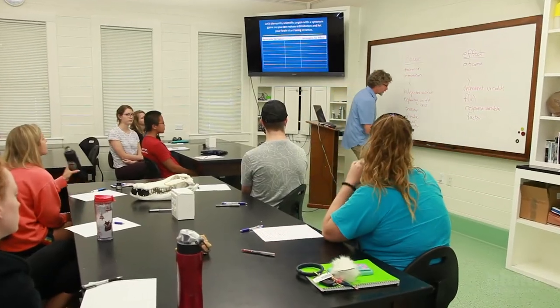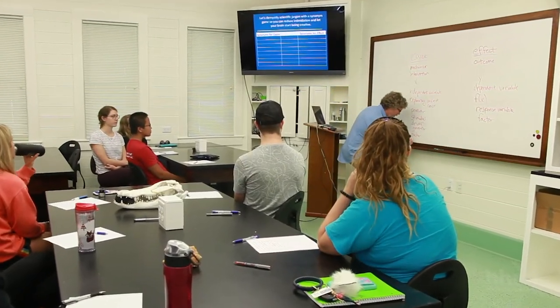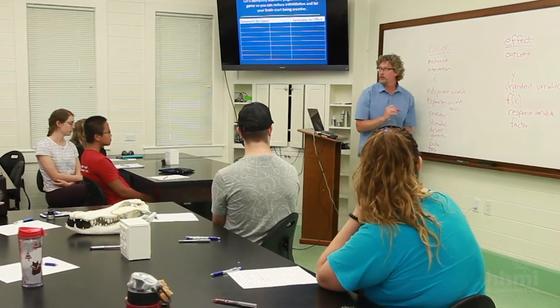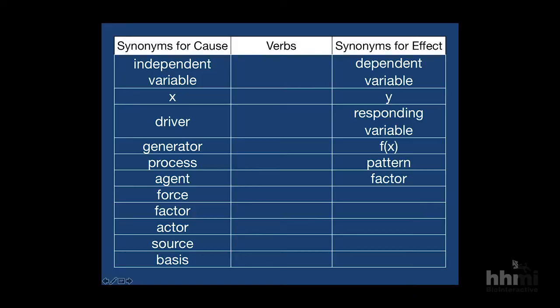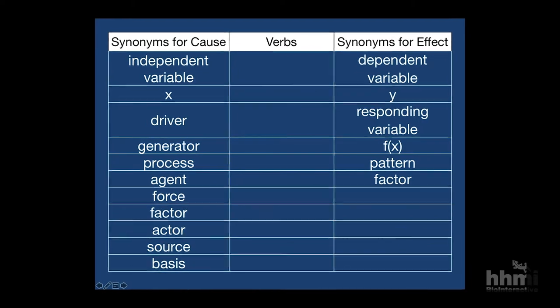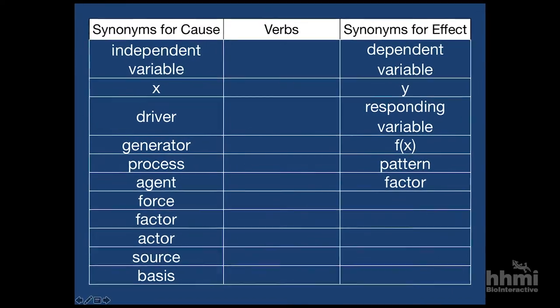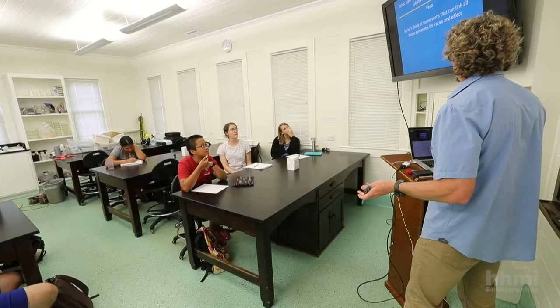Now that we have multiple synonyms for cause and effect, those general words — cause and effect — are actually subjects and objects. And you ask the students what links a subject and an object in a sentence. They look stunned for a second. And it is that easy: the answer is a verb. So let's think of some verbs that can be used to link.